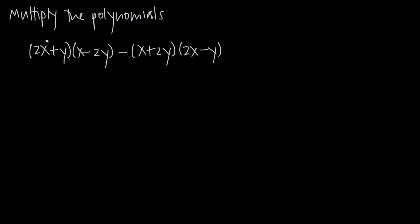In this case, we have the binomials 2x plus y and x minus 2y, and we're multiplying those together. Then from that polynomial result, we're subtracting the multiplication of these two binomials — the product of x plus 2y and 2x minus y.